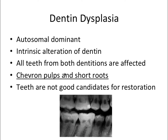Dentin dysplasia has a type 1 and a type 2. A helpful mnemonic: if you hold up one finger, it looks like a root — that's type 1. If you hold up two fingers spread apart, it kind of looks like the arrow-shaped chevron pulp — that's type 2. That's how I remember which type is which.